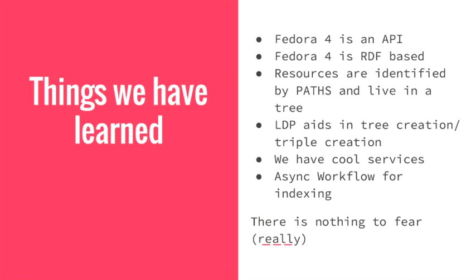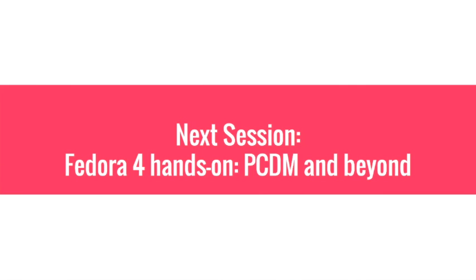What we have learned here is that Fedora 4 is really an API. Things can change in the future, but how you access your resources, how you deal with them, how you create and remove them, will be consistent. Fedora 4 is RDF-based — XML can live as a side object stored like a JP2 or whatever, but you don't really need it. We no longer have local identifiers; we have paths that live in a tree, and it's very important to know that. We have LDP which allows us to create these trees and make it simpler. We have preservation services, and everything that goes behind that is async and allows us to build very awesome workflows based on Apache Camel.